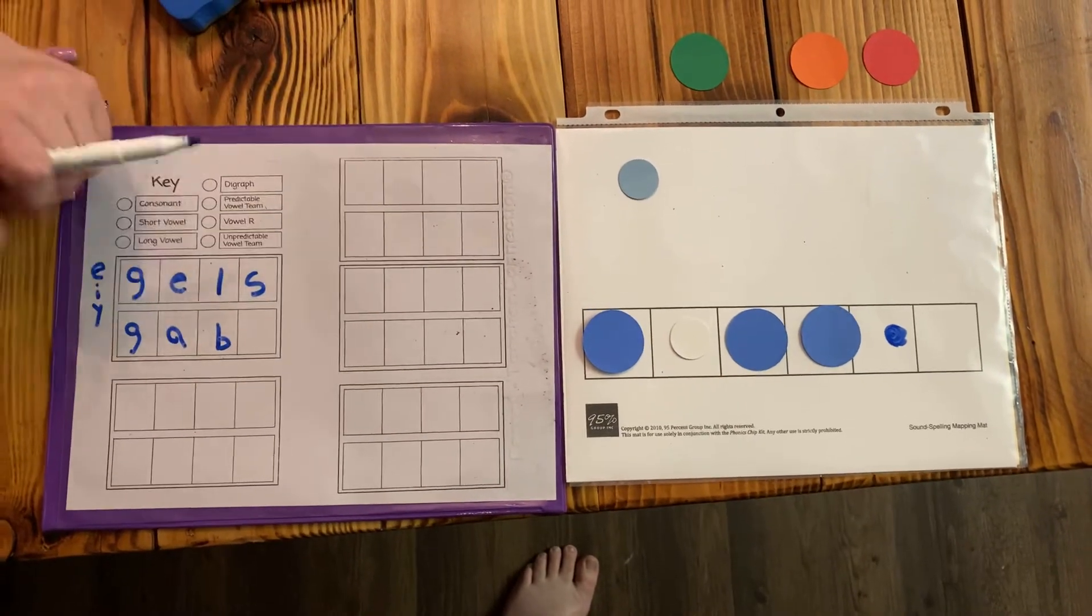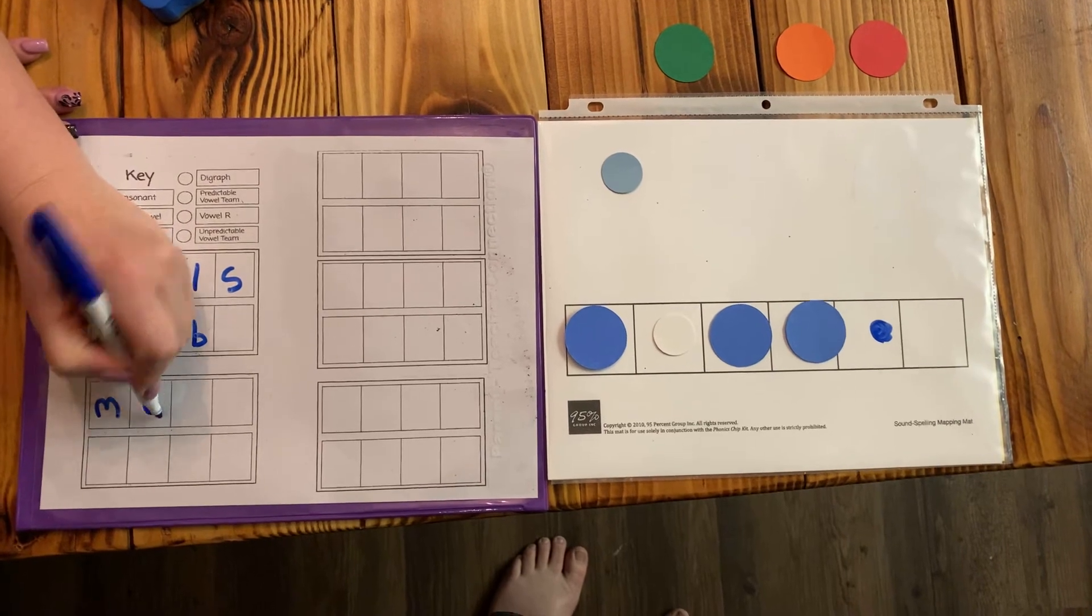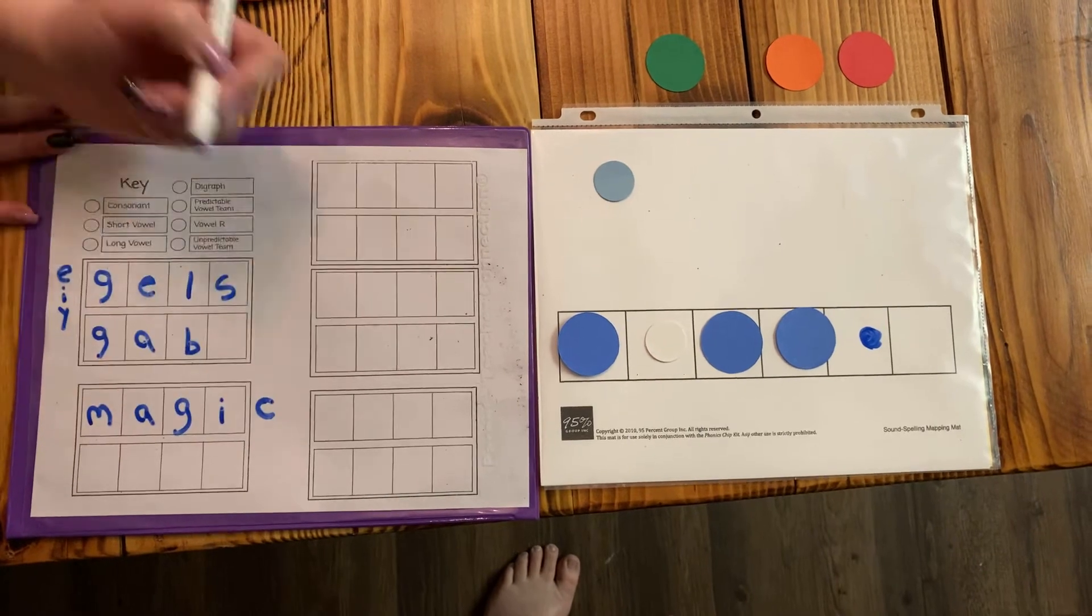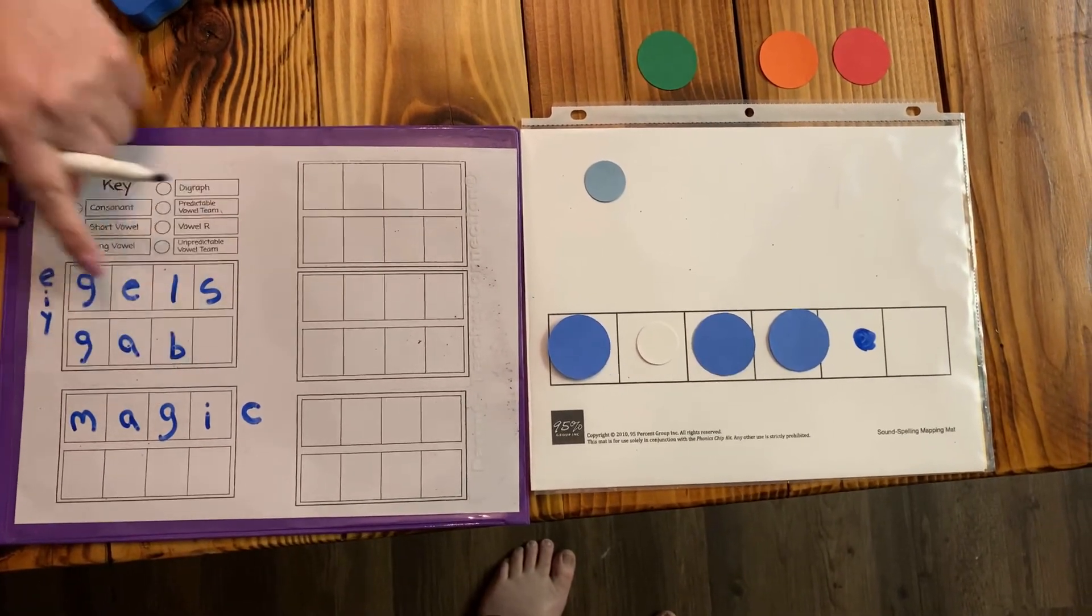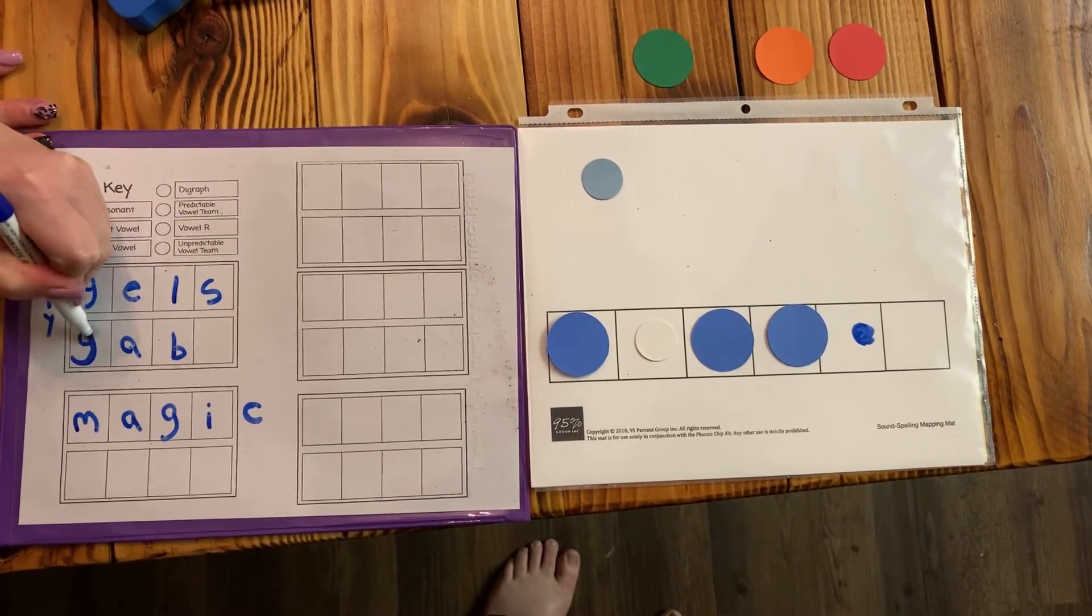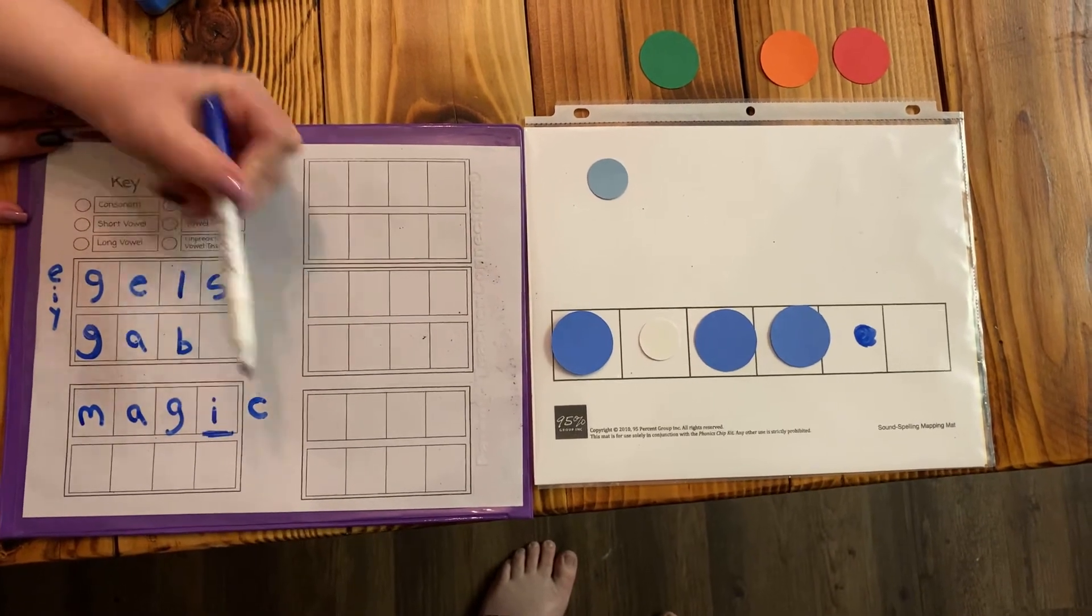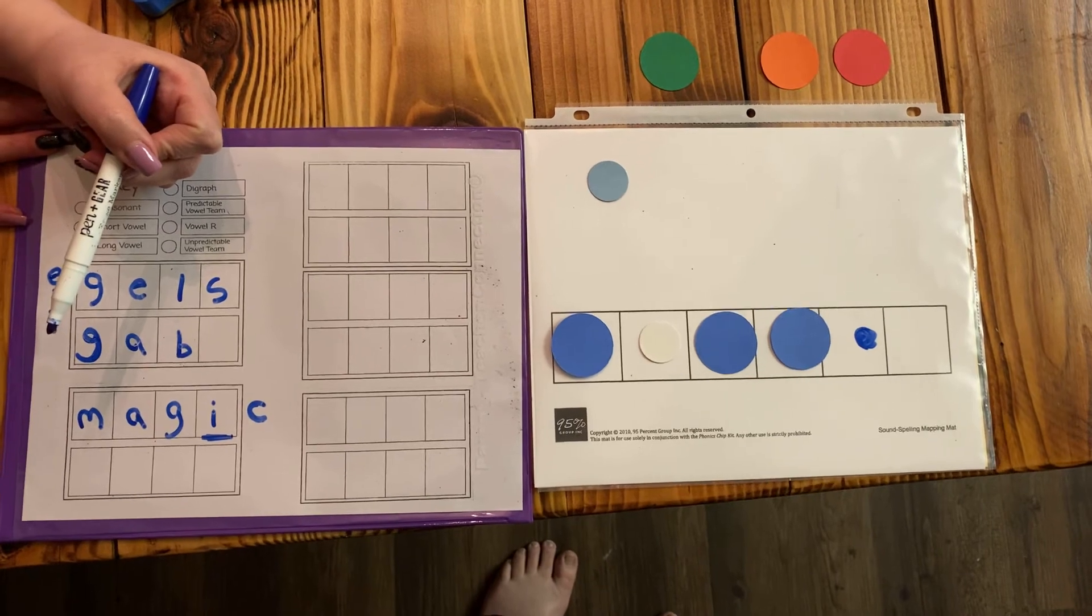So let's come over here and write it. M, a, j, i, k, magic. So you see how we have the j in magic and the j in gels, but we have a g in gab. So here you have your I making this a soft G.